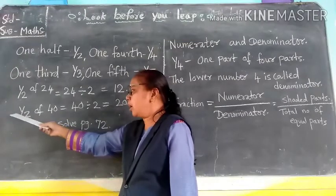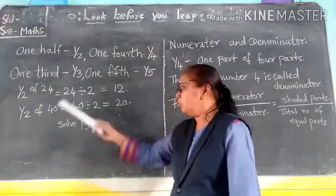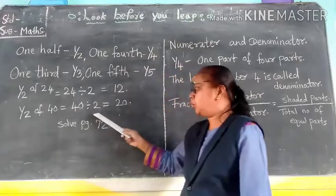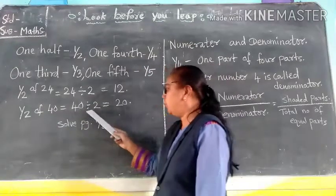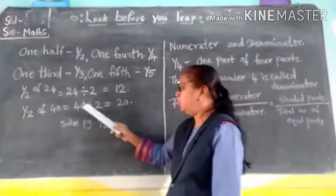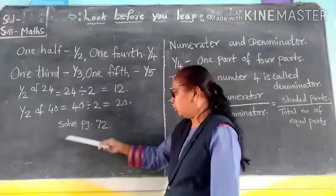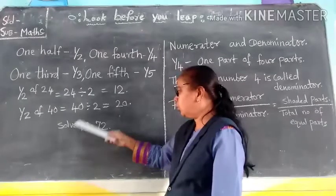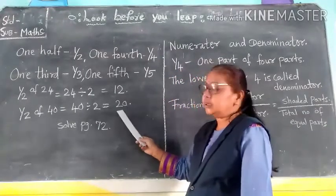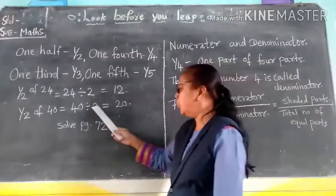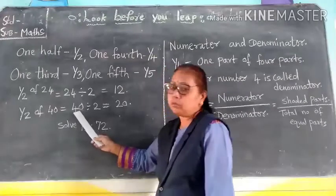Now you are going to write one half of 40. One half of 40 means 40 divided by 2. If you divide 40 by 2, two twos are 4, 4 minus 4 is 0, bring down the 0, and 20 is the answer. Two times 20 is 40.